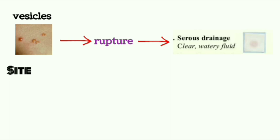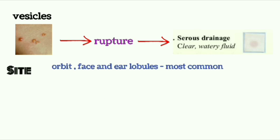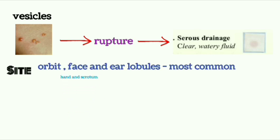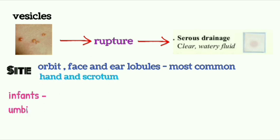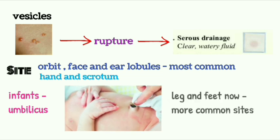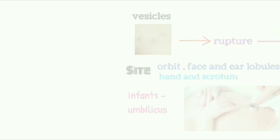Sites: The most common sites are the orbit, face, and ear lobule. It also occurs in the hands and scrotum. In infants, the infection most commonly occurs at the umbilicus. Legs and feet are now becoming more common sites.